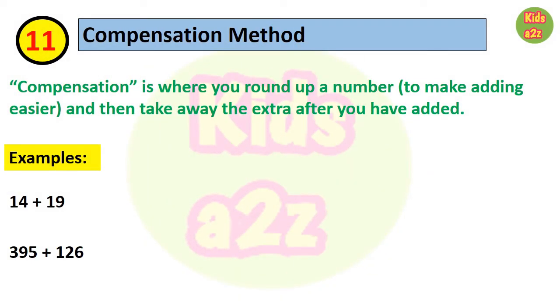Next is compensation method. Compensation is where you round up a number to make adding easier, and then take away the extra after you have added. For example, to add 14 and 19, we round up the number 19 to 20 because it is a much easier equation, and the result is 34. Since we added 1 to the equation, we now need to subtract 1 from the answer to compensate for the adjustment. So we need to subtract 1 from 34.